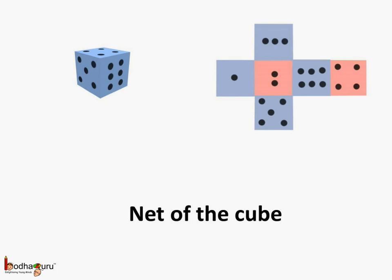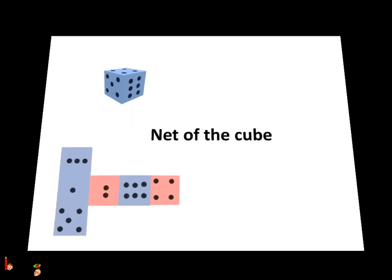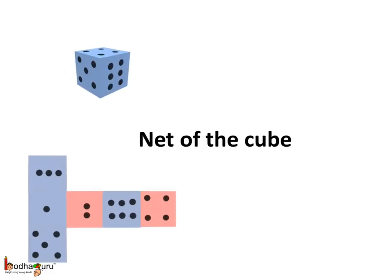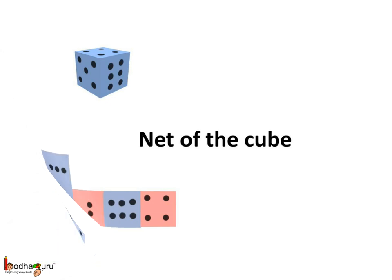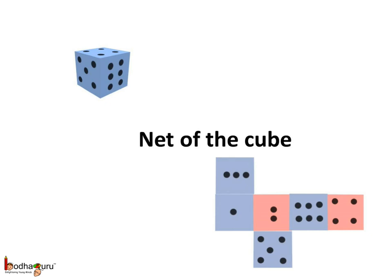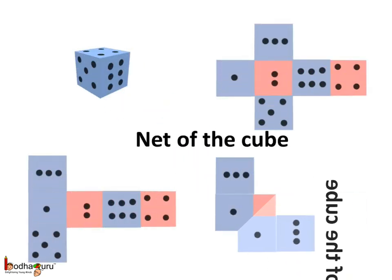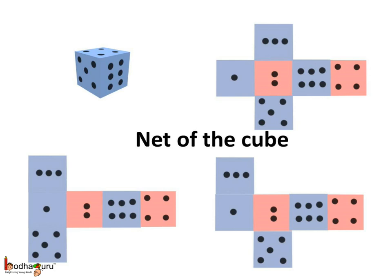Let us see a few more nets of a cube. If we unfold the dice to find its net, the 2 was at the base and 4 was on top when we opened the solid shape. We could also open the shape in a different way to find another net. In this second net, the position of 2 and 4 remains the same, but the position of 3 and 5 has changed. Again, if we unfold the cube in a different way, the position of 2 and 4 remains the same but the position of 3 has changed. If we fold any of these 3 nets, we get back the cube.